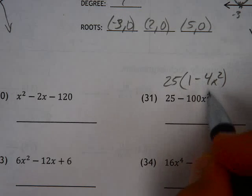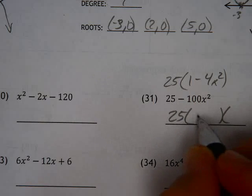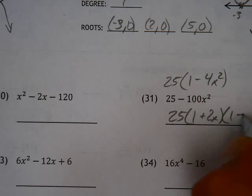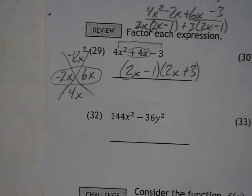Those are both perfect squares. So I can factor those to conjugates, 25 and then in my parentheses I have a 1 plus 2x and a 1 minus 2x. Now the difference of two perfect squares is factored to conjugates.